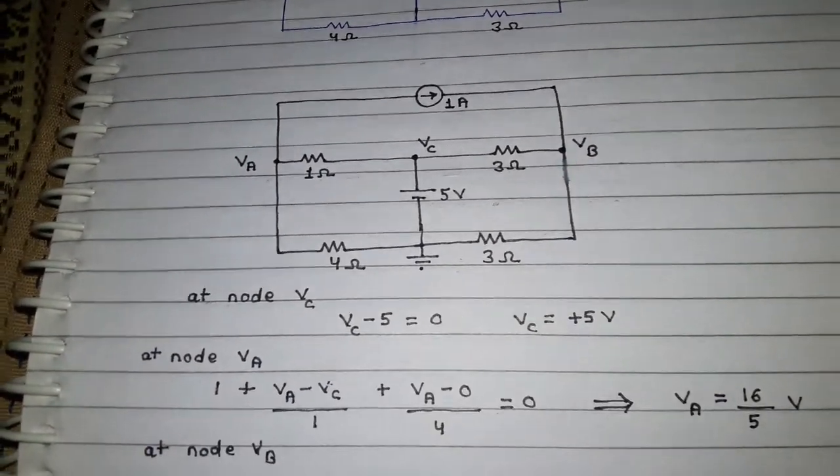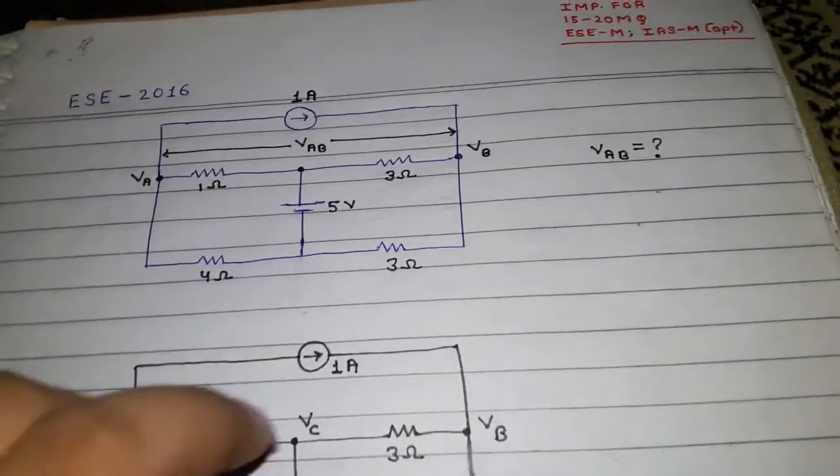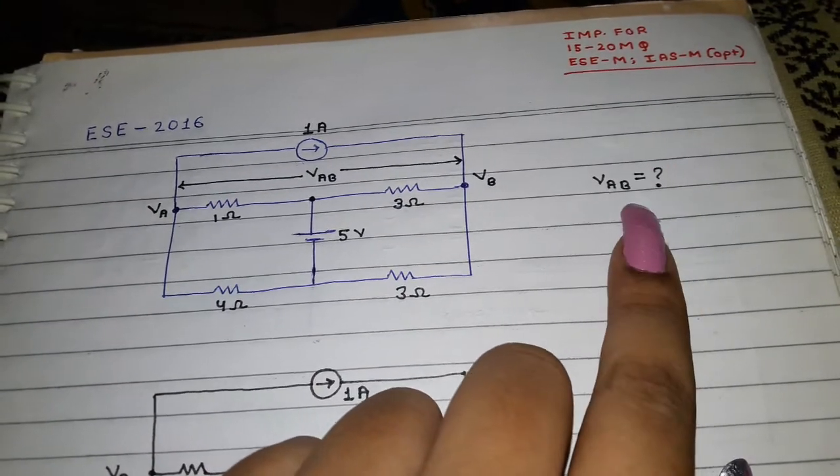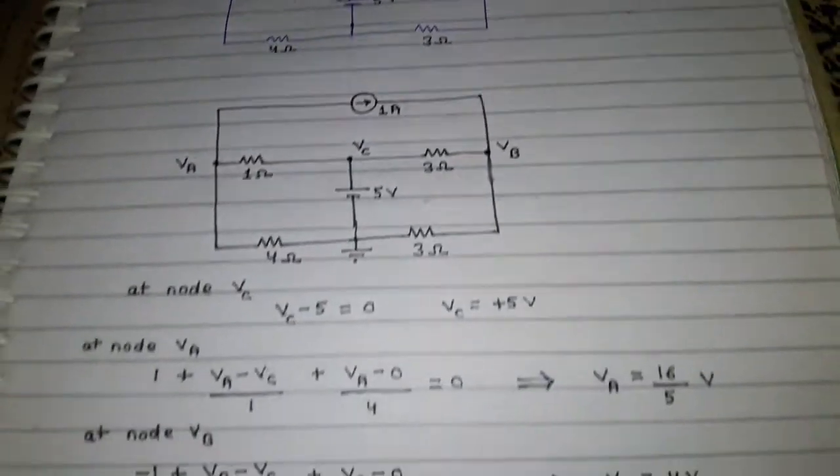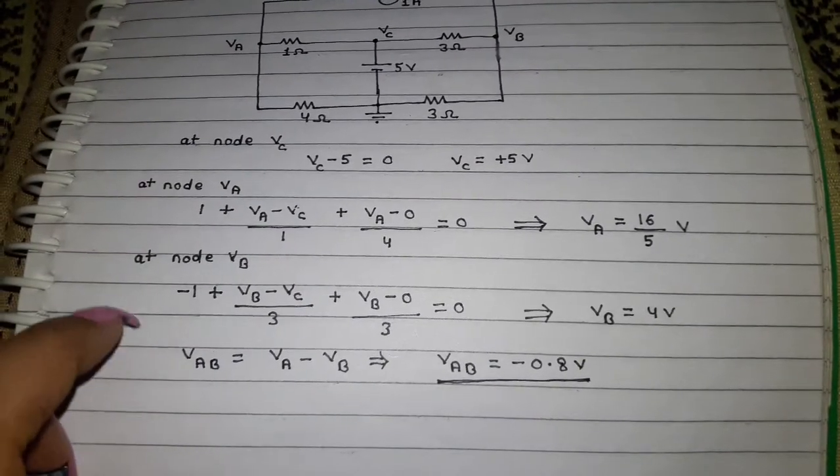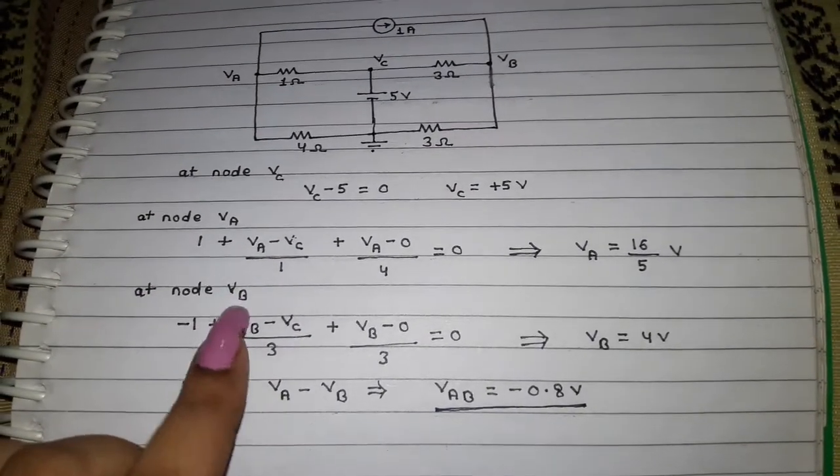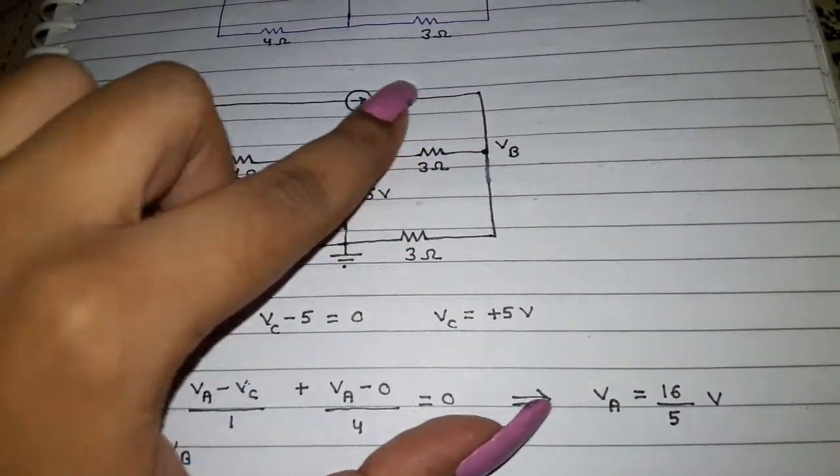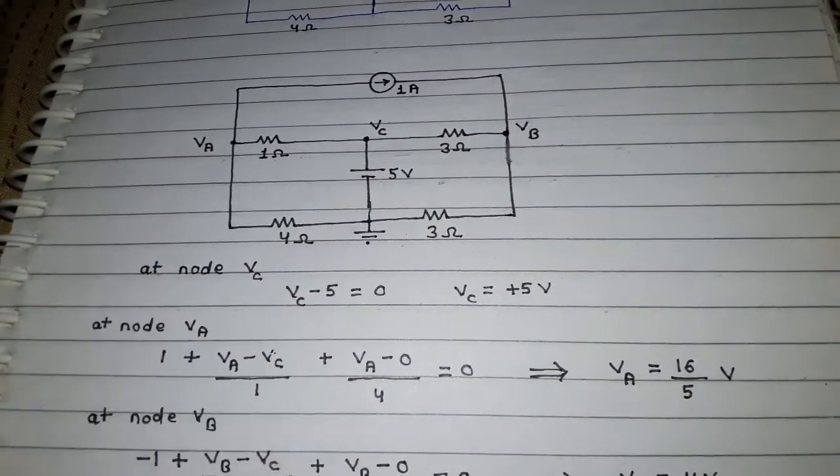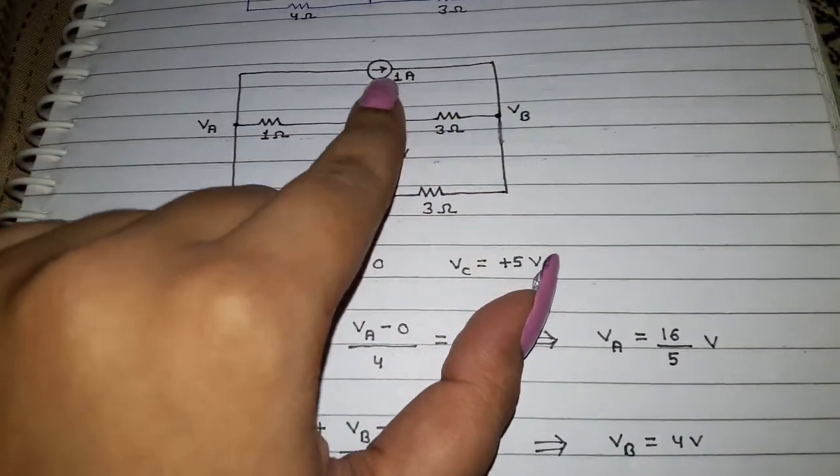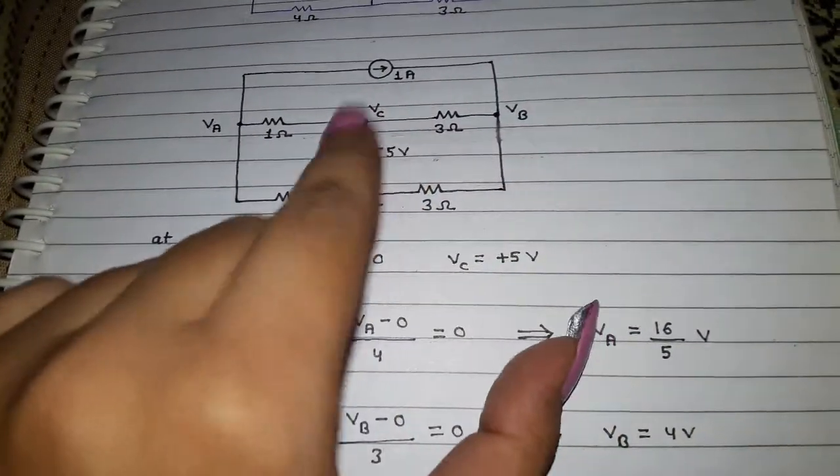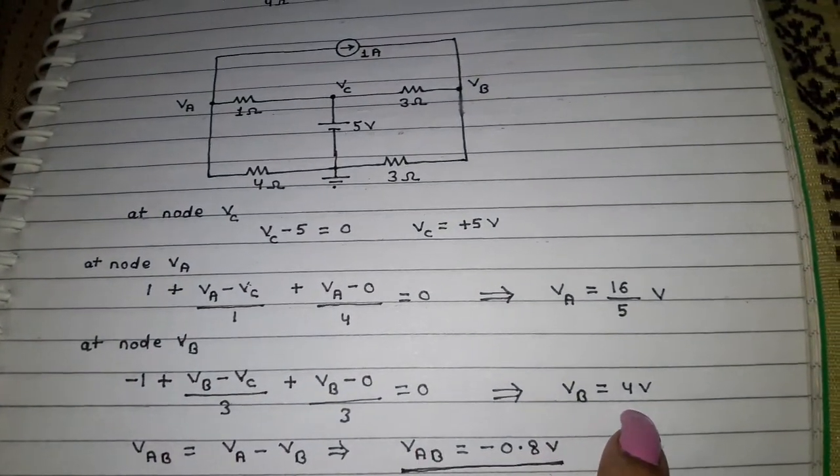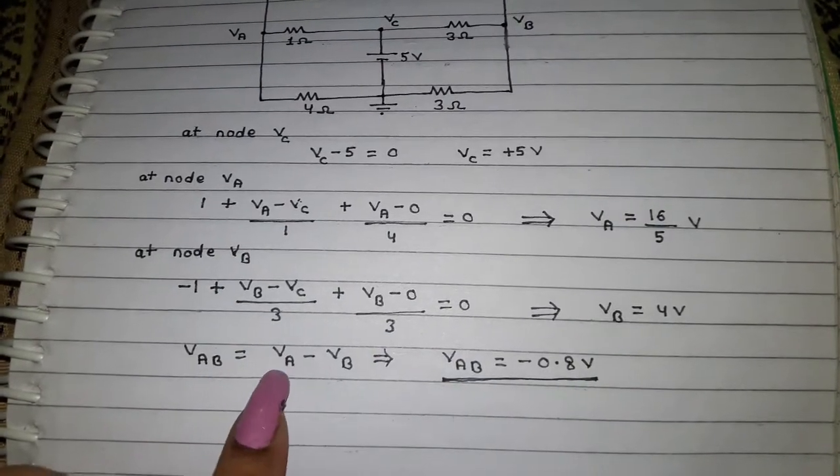Now your reference node changes again. Now your reference node is VB. We are doing so because we need to find out VAB, which is actually the difference between VA and VB. Your VAB is actually VA minus VB, so we need to find out VA and VB as well. We are applying nodal analysis with reference as VB. Since the current direction is opposite, minus 1, voltage minus voltage upon resistance, voltage minus this upon resistance. You get the value of VB as such. Now your VAB equals VA minus VB and you get the value of VB as minus 0.8 volts.